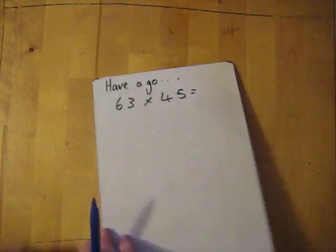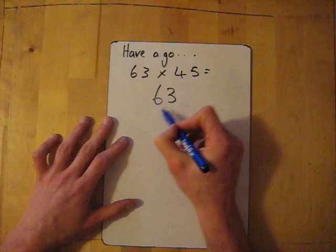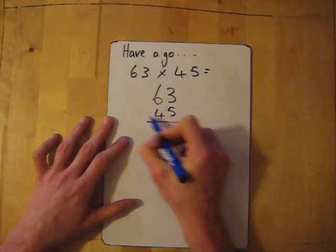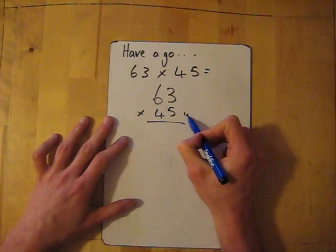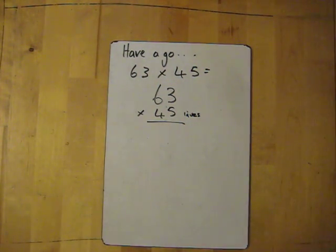Now have a go at this yourself. So 63 times 45. So write 63, 45. We've got our lives. Okay. So if you want to have a go at this, pause it. I'll go through the answer in three seconds.